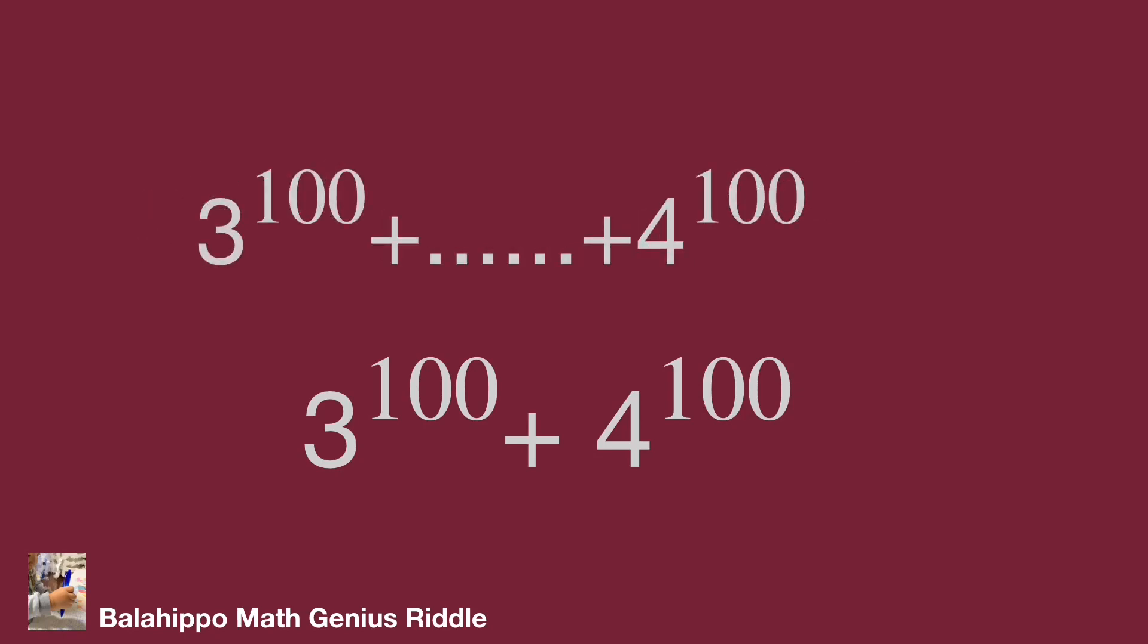As equal to 3 power of 100 plus dot dot dot to several positive items to the last item 4 power of 100. It's bigger than 3 power of 100 plus 4 power of 100.